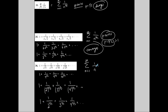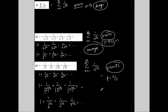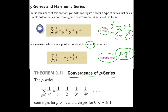I can write this as 1 over n to the 2/3. Plugging in n equals 1 gives 1; plugging in n equals 2 gives 1 over 2 to the 2/3 — it follows exactly. This is a p-series where p is equal to 2/3. Since p is between 0 and 1, the series diverges. I recognize it as a p-series, p is 2/3, and if p is between 0 and 1 then the series diverges.